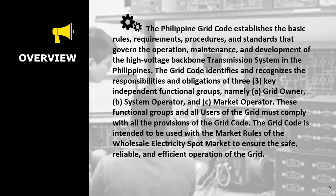This grid code identifies and recognizes the responsibilities and obligations of three key independent functional groups: namely a grid owner, the system operator, and the market operator.